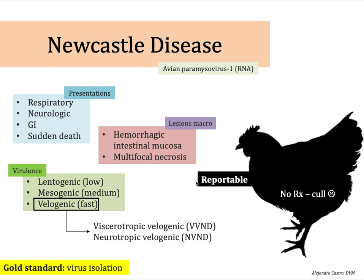The velogenic form is divided into viscerotropic and neurotropic, and they can reach mortalities up to 100%. You can also see a decrease in egg production, which is important in poultry.